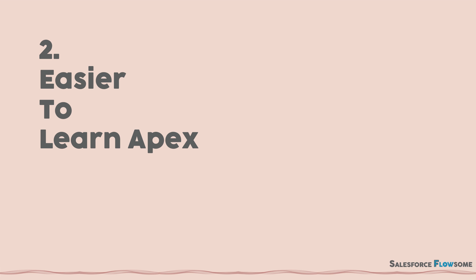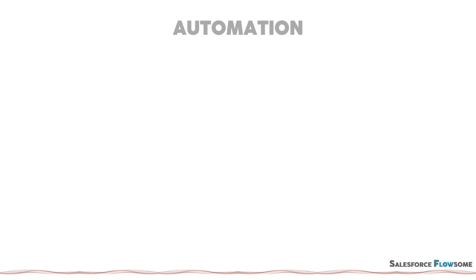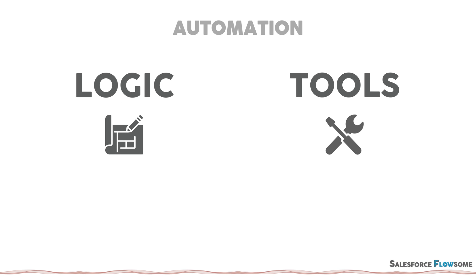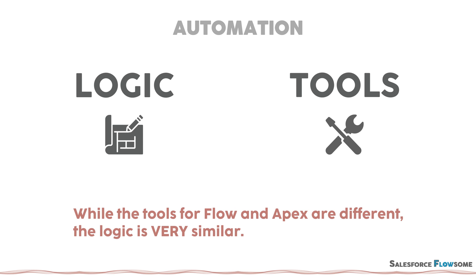The second reason is, once you are familiar with Flow, it will be a lot easier for you to learn Apex. I will summarize automation as two parts: logic and tools. Logic is the sequence of actions required in order to solve a problem, while the tools are the building blocks to construct the logic. While the tools we use in Flow and Apex are different, the logic is very similar.